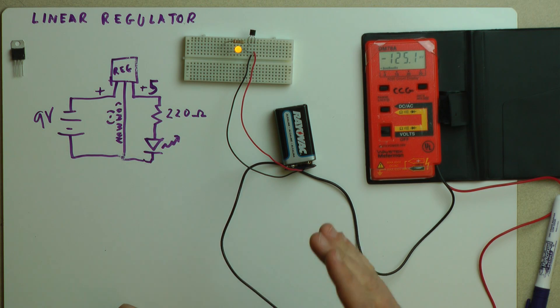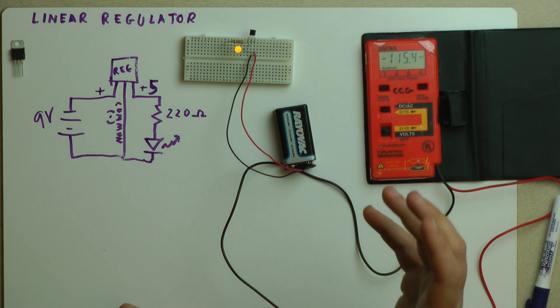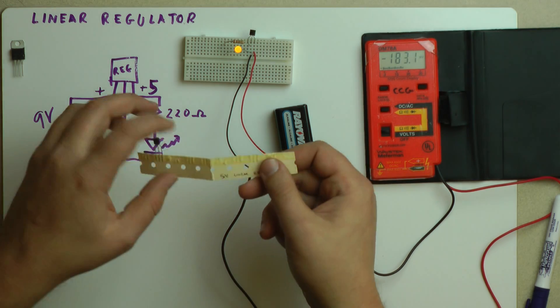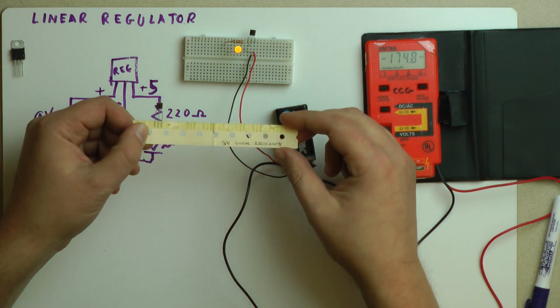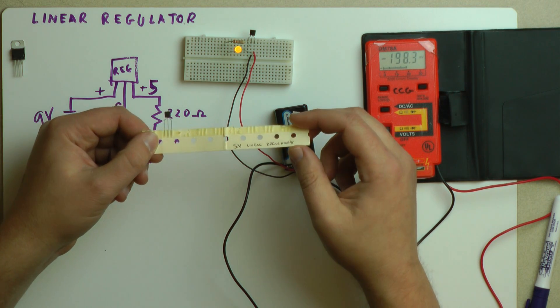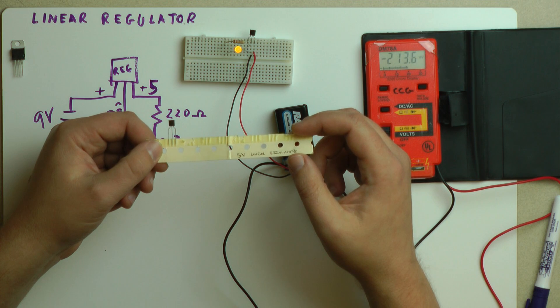Linear regulators can take in one DC voltage, put out another DC voltage. Now I happen to have in my storehouse of parts, this random piece of electronics, say the 5 volt linear regulator, and I did not know anything about this before this video, so I had to look it up.